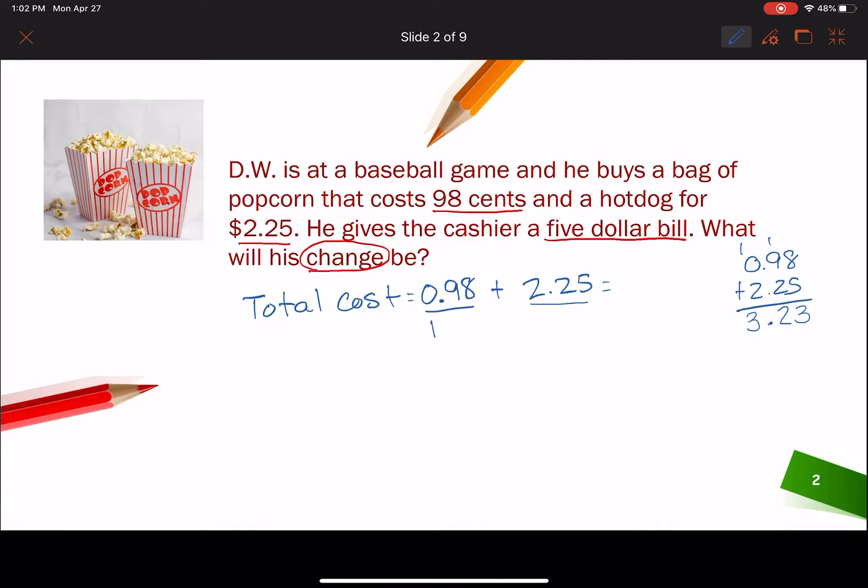I'll show you how I would do it in my mind. I would say, oh, this is two cents away from a dollar. So if I add the two cents and then I say $1 plus $2.25, that would give me $3.25. But then I have to subtract that two cents and I'll get $3.23, which is the same as what we got over here. So he spent $3.23.